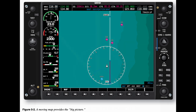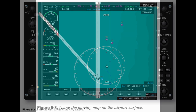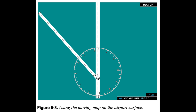Maintaining awareness on the airport surface. On most units, you can change the range on the Moving Map to see a more detailed picture of the airport surface while operating on the ground. This feature is especially useful when the arrangement of runways and taxiways is complex. The Moving Map in Figure 5-3 shows the aircraft prepared to taxi onto one of two possible runways.